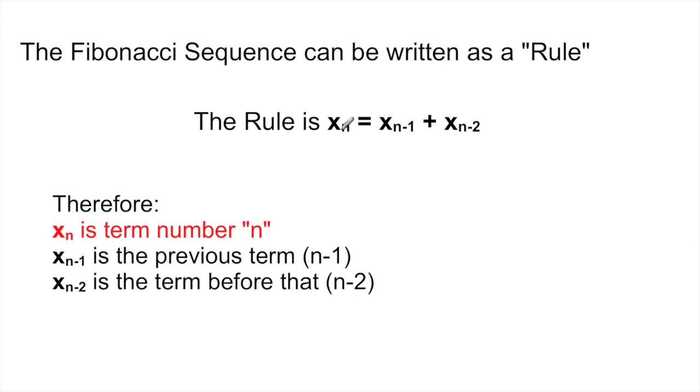The rule is x_n = x_(n-1) + x_(n-2). Your third number will equal the first number plus the second number. The reason for minus is because it's the previous term. So the previous term plus the previous term before that. That's where you get the two from.